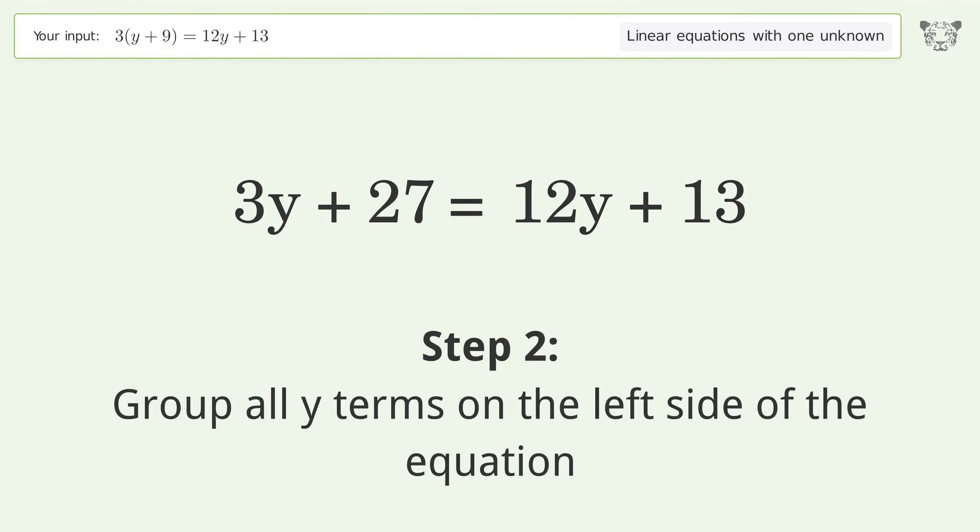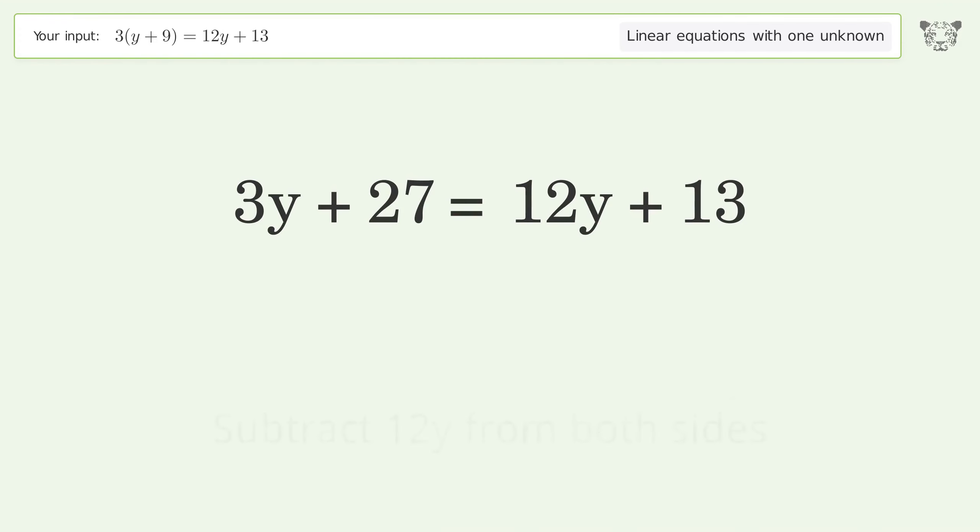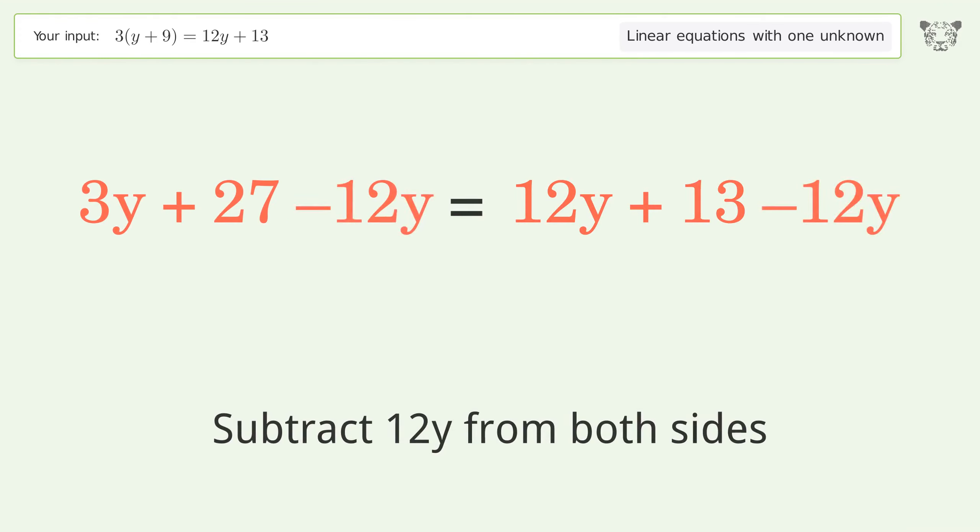Group all y terms on the left side of the equation. Subtract 12y from both sides. Group like terms. Simplify the arithmetic.